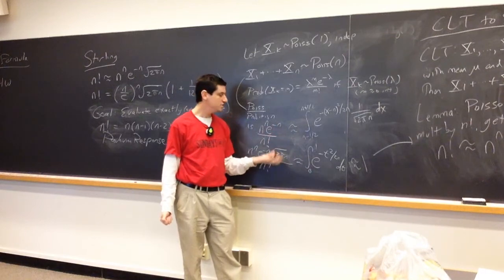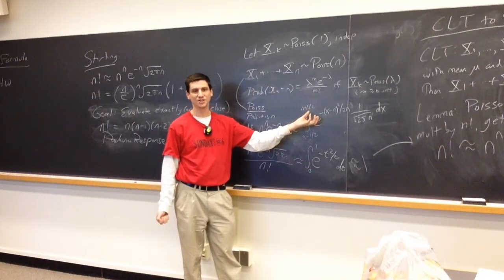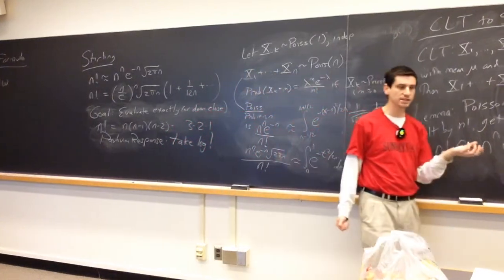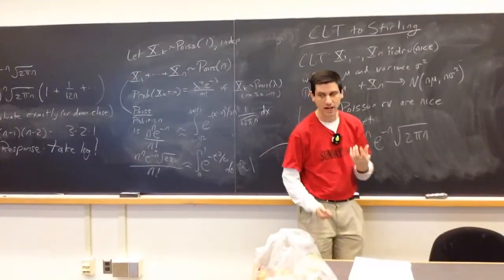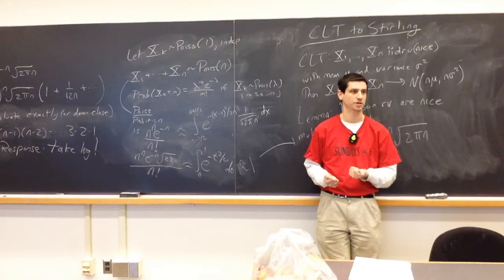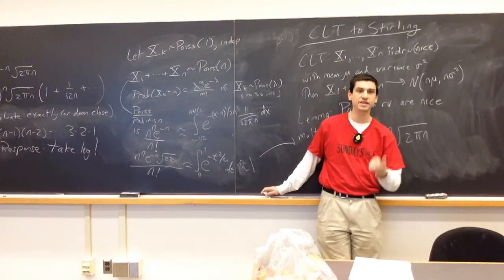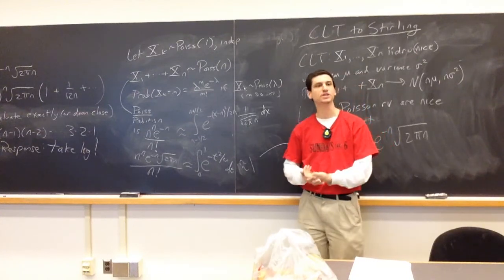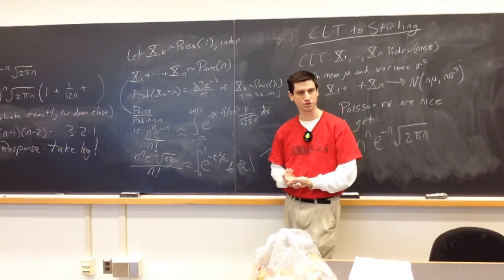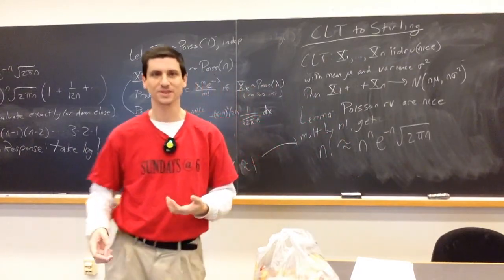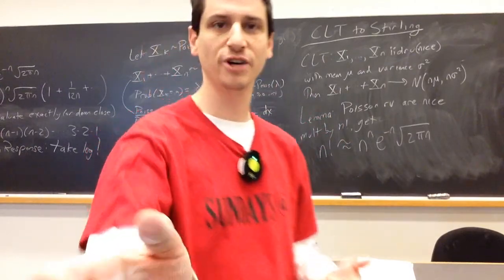Stirling's formula follows from applying the central limit theorem to sums of Poisson random variables — calculating things two different ways. This is one of the key ideas: calculate something two different ways. Fortunately, we never need to use Stirling's formula to prove the central limit theorem, so this is not circular. On Monday, I will prove the CLT in the special case of flipping a fair coin, and then we'll start moving into the generating functions chapter.